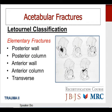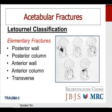The Letournel classification system for acetabular fractures is important as it has both therapeutic and prognostic significance. It is divided into five elementary and five associated fractures. The elementary fractures include the posterior wall fracture, the most common type of all acetabular fractures; the posterior column fracture; the anterior wall fracture, which is quite rare; the anterior column fracture; and the transverse fracture, which involves both the anterior and posterior columns.